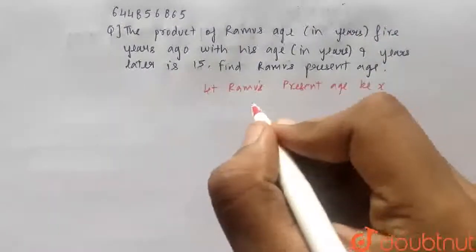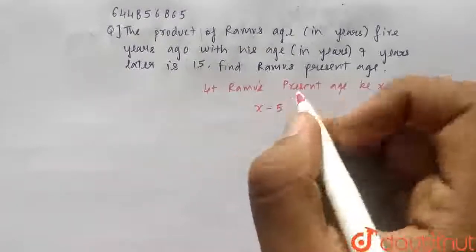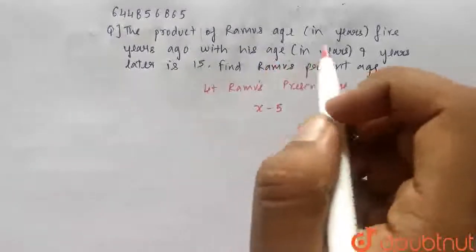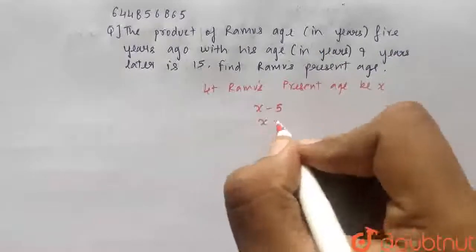Before 5 years ago, Ramu's age will be x minus 5. And similarly, 9 years later, Ramu's age will be x plus 9.